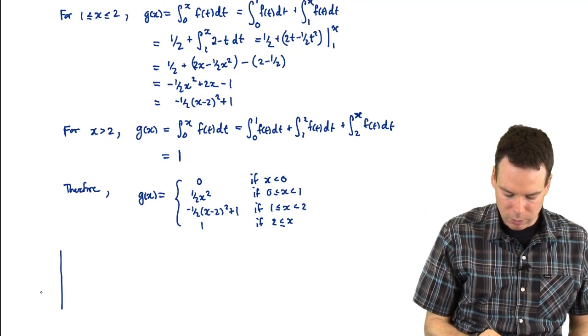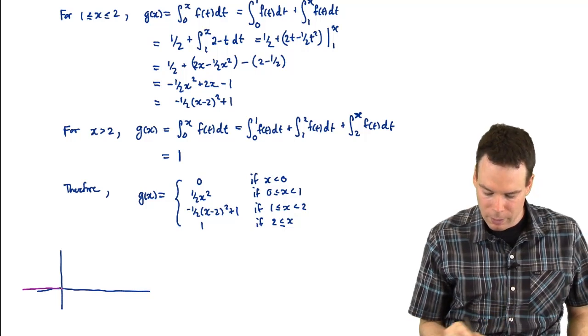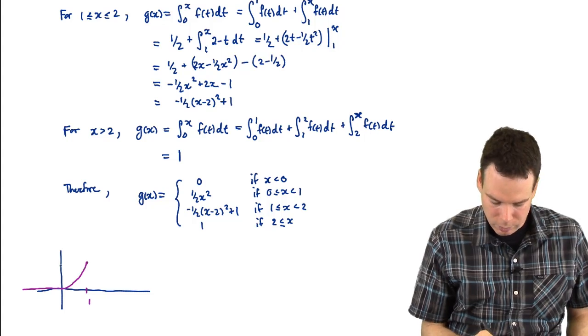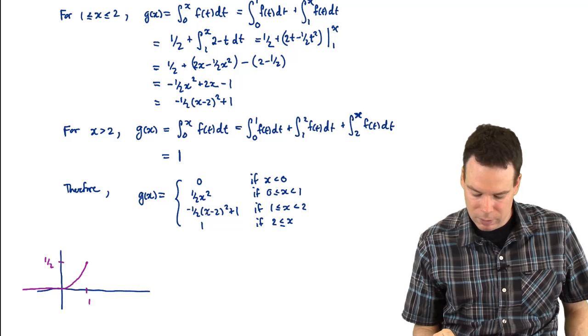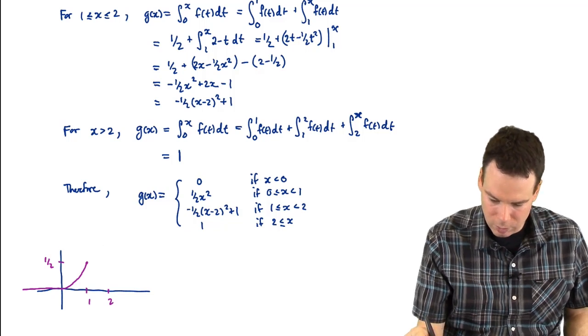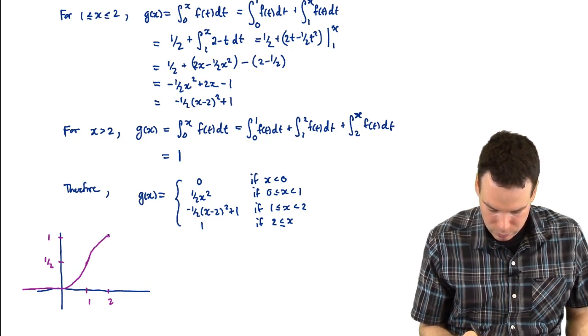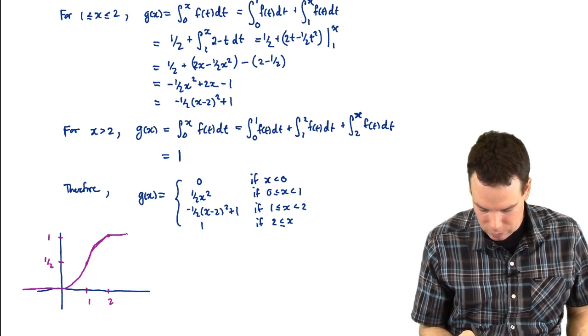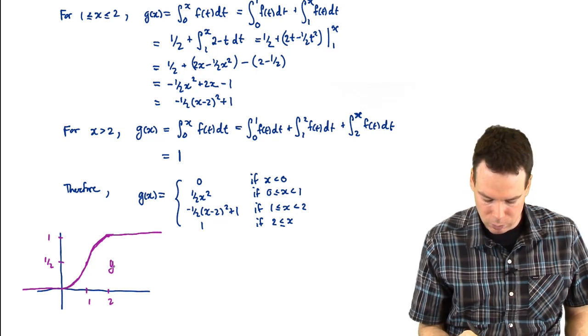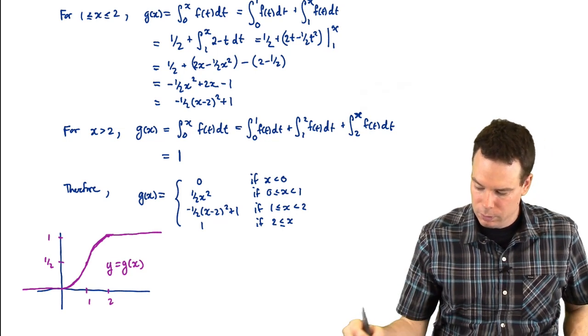Now, what does the graph of it look like? We've got the graph of f above. The graph of g is 0 all the way along, and then it becomes this parabola out to 1, which has a height of 1/2. And then it becomes this next parabola, which is shifted upside down, has a vertex now at 2, way up here of height 1. And it just matches up nicely with that one. And then once you hit the vertex, it then continues along straight. And so there's the sketch of our graph, g. That's y equals g of x.